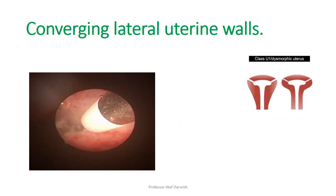Another difficulty is convergent lateral uterine walls, called a T-shaped uterus, which is now included in some classifications of uterine anomalies. In such cases, if you cannot reach the triad due to the convergent lateral walls, you can make lateral incisions using fine probes — like monopolar or bipolar 5 French probes — to widen the endometrial cavity and gain access to the triad.